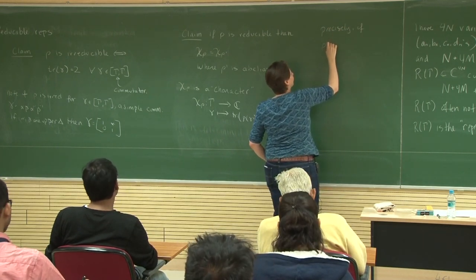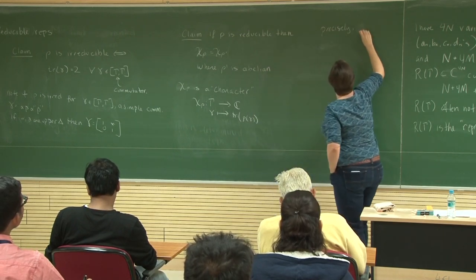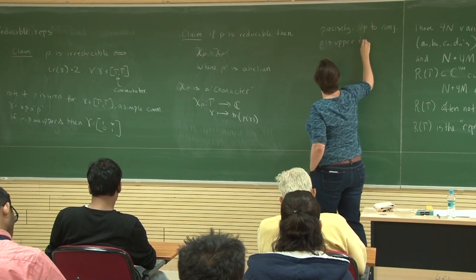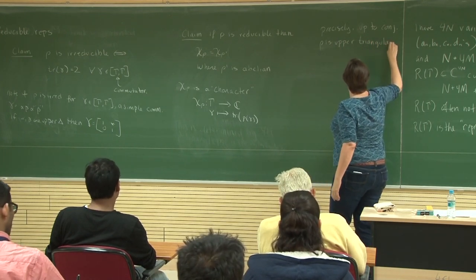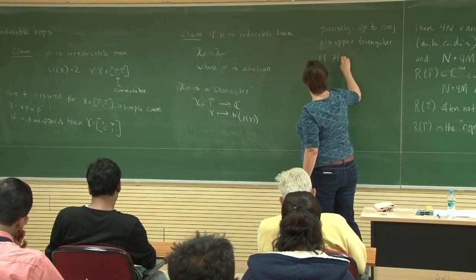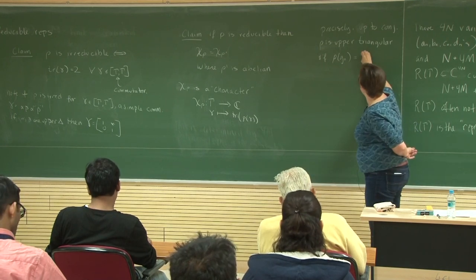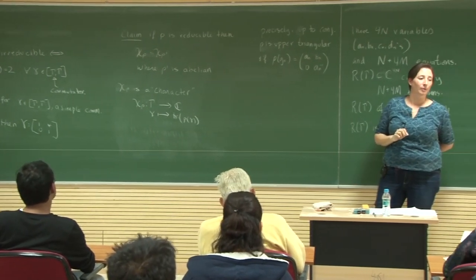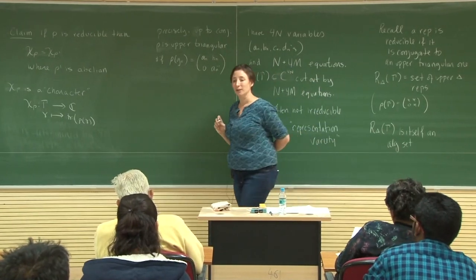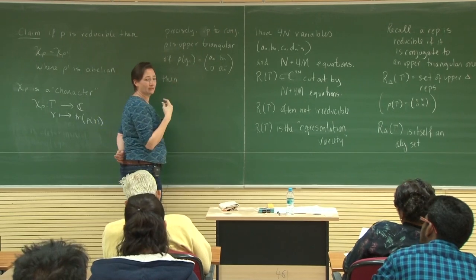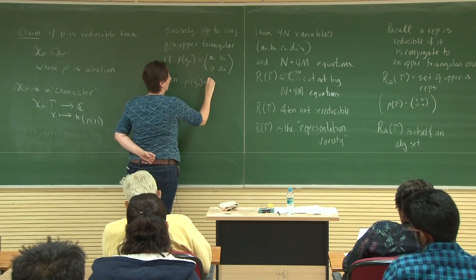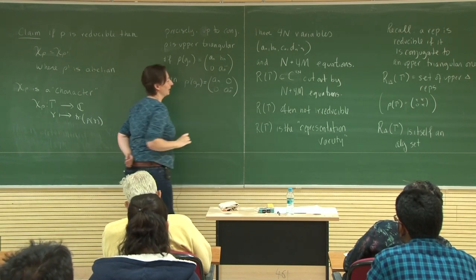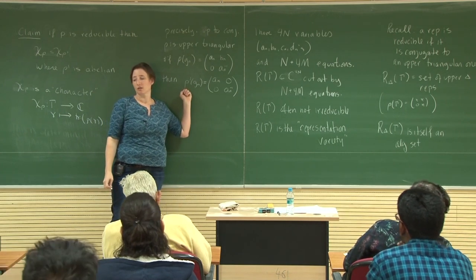To be precise: up to conjugation, rho is upper triangular, and on generator g_n, rho(g_n) looks like the matrix (a_n, b_n; 0, a_n⁻¹). The abelian cousin rho prime is defined by the same assignment but erasing b_n — making it 0. The claim is that if you do that you actually get a representation, so the check is that this map is still a homomorphism.